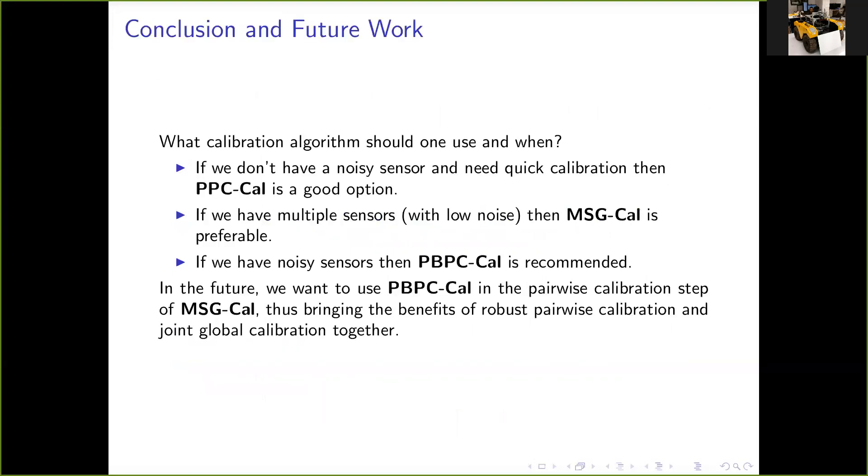I want to conclude my presentation with some remarks on what calibration algorithms to use and when. If you do not have a noisy sensor and need a quick calibration, then using PPC-Cal should suffice. If we have multiple sensors which are not noisy, then MSG-Cal is preferable. But if we have noisy sensors, then PBPC-Cal is recommended because it adds more geometrical constraints across modalities to reduce the effect of sensor noise. Finally, in our future work, we want to use the constraints used in PBPC-Cal in the pairwise calibration step of MSG-Cal. Thus, bringing the advantages of robust pairwise calibration and joint graph-based optimization together.